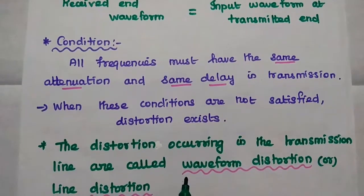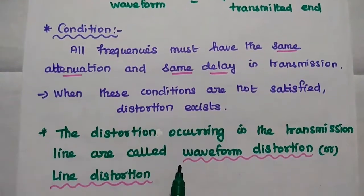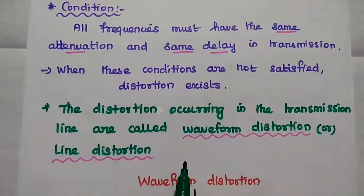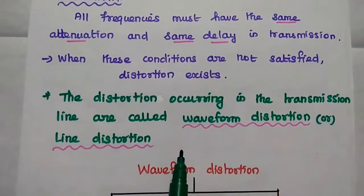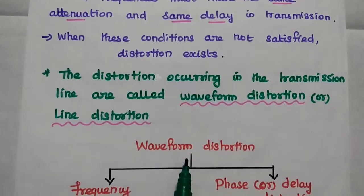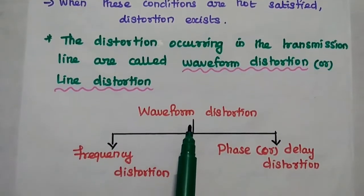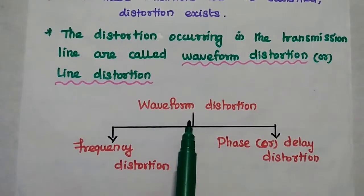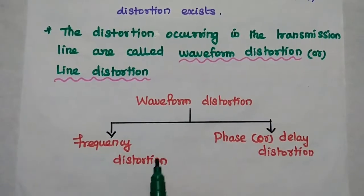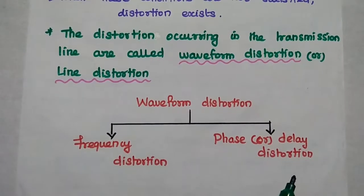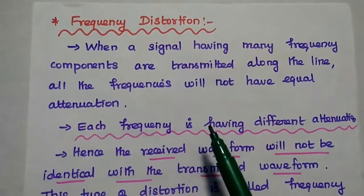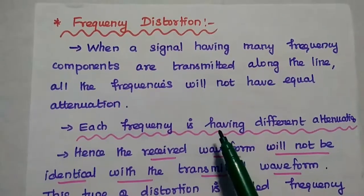The distortion occurring in the transmission line is called waveform distortion or line distortion. Waveform distortion is classified into two types: one is frequency distortion, and the other is phase or delay distortion.